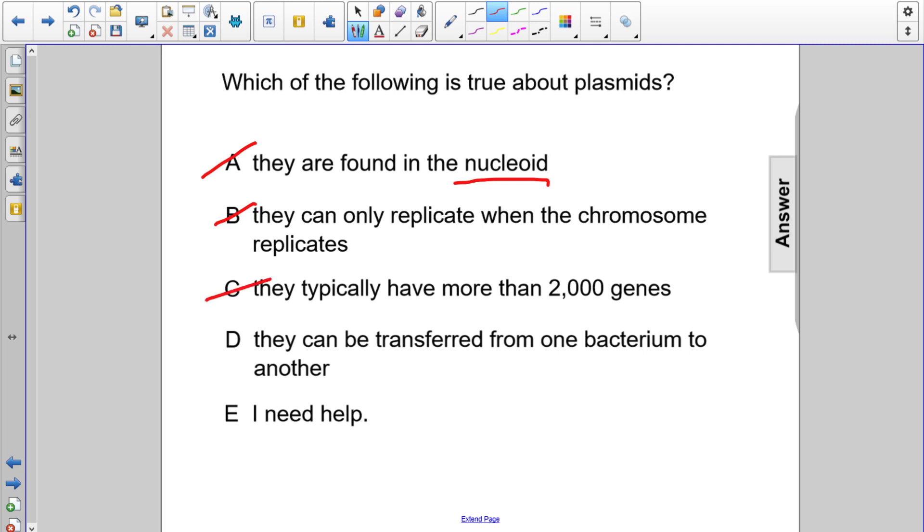And choice D says they can be transferred from one bacterium to another. This is true about plasmids, they can be transferred from one bacterium to another. And this allows bacteria to share various genes with each other, such as antibiotic resistance. So choice D is the answer.